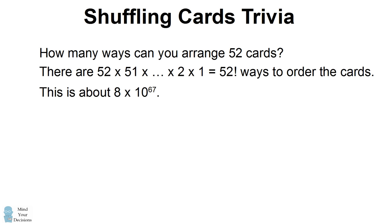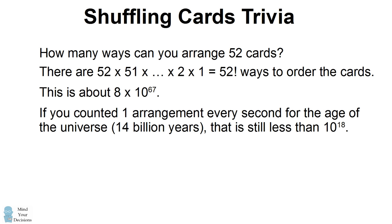This is an astronomically large number. However, if you were to count one arrangement of a deck of cards for every second of the age of the universe, you would still only count less than 10 to the 18 possibilities. So what this means is we're not going to solve this problem by counting out all the different arrangements.